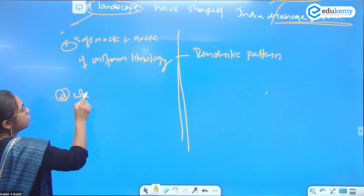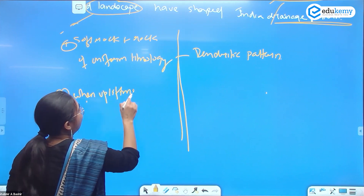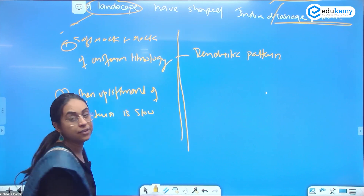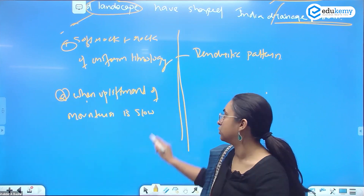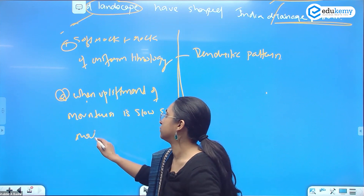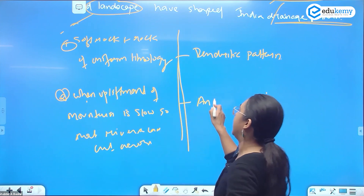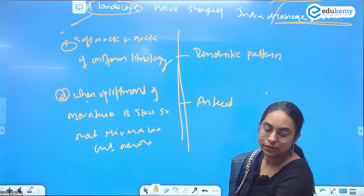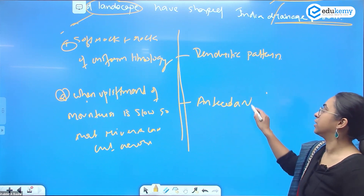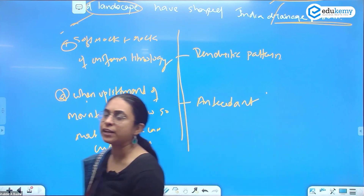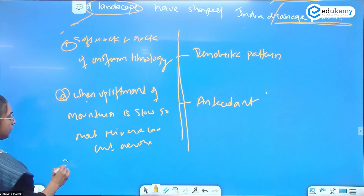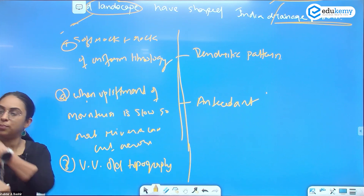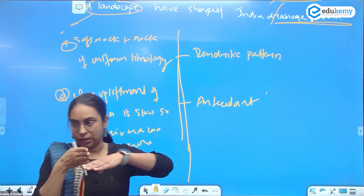When upliftment of the mountain is slow — the mountain is rising slowly — and rivers can cut across, we will have antecedent Himalayan rivers and antecedent drainage pattern. We have antecedent drainage type when you have very old topography where rivers can cut down through the rising landmass.